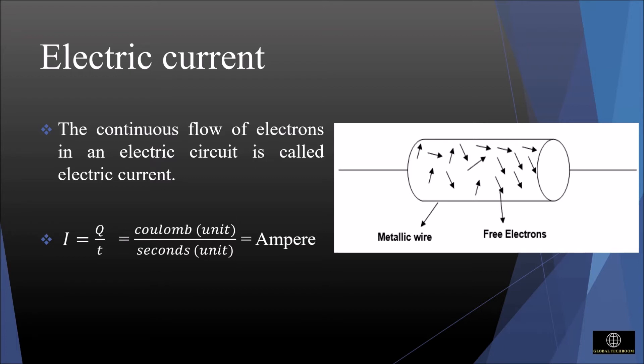The conducting material consists of large number of free electrons that move from one atom to another freely. Electric current is denoted by the symbol I. I is equal to Q by T, where Q is the charge and T is the time. The unit of charge is Coulomb and the time in seconds.